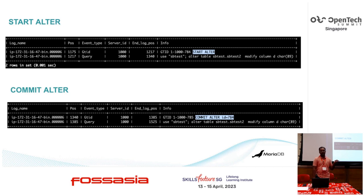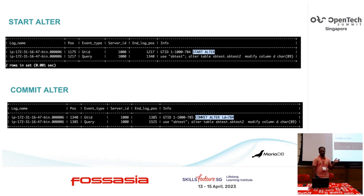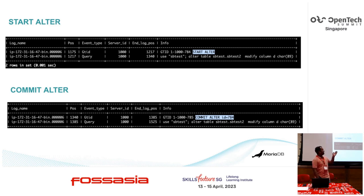The GTID implementation in MariaDB is a little bit different. We use domain ID, server ID, and sequence — three variables. For example, GTID 1-1000-784: one is the domain ID, 1000 is the server ID, and 784 is the sequence. For the start alter, you will get the event with the GTID plus start alter in the binlogs, and then the real alter command will be logged in the binary logs.